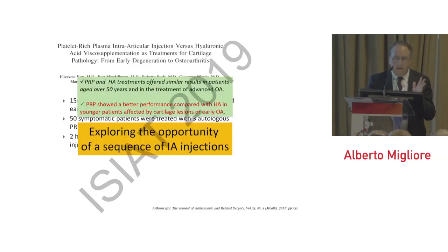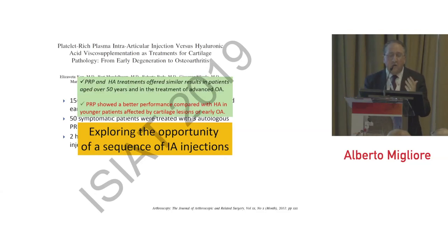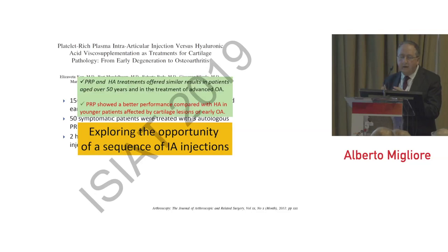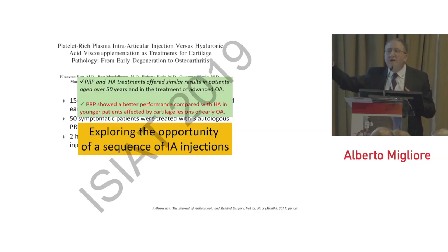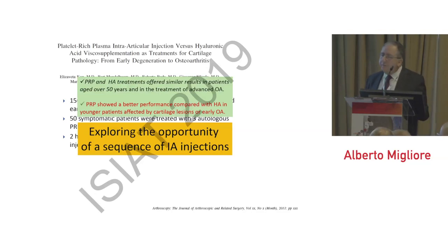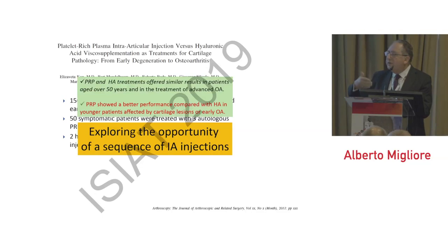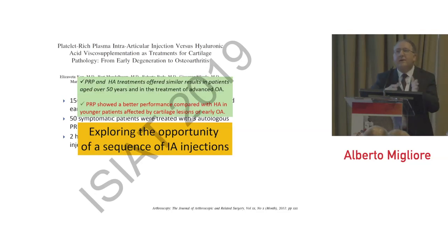Regarding PRP, it offered similar results to hyaluronic acid in patients aged over 50 years, but PRP showed better performance compared with hyaluronic acid in younger patients affected by cartilage lesion or early OA. This leads to the concept of sequentiality of intra-articular treatment in osteoarthritis. We have no clear evidence-based data yet, but we have to investigate whether there is a rationale for sequential treatment starting with a given product at a younger age and following with other products.